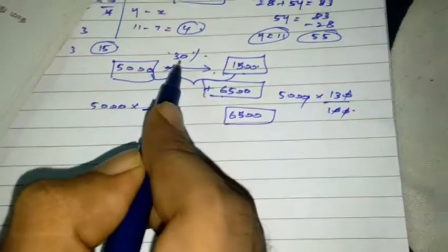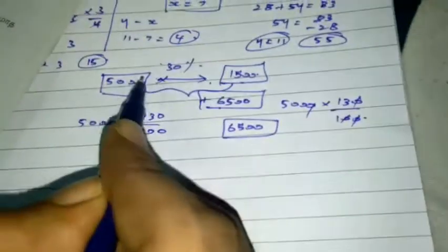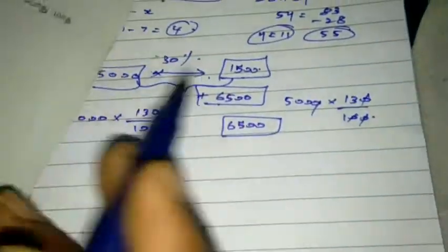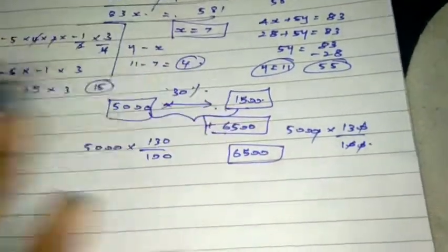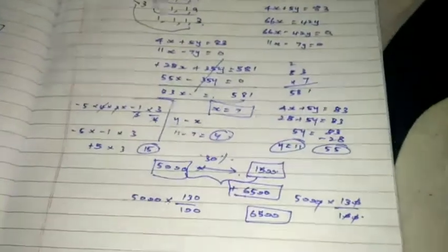30% now, 30% increase. So, that is 100%. Percentage is easy. So, if you understand it, it is easy. Let's see.